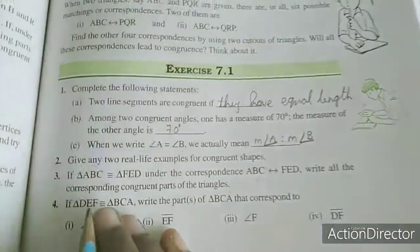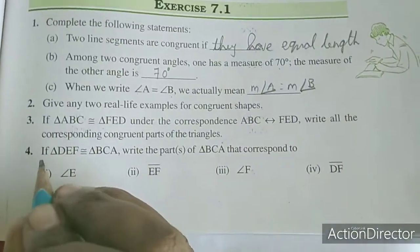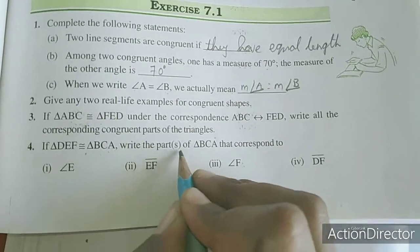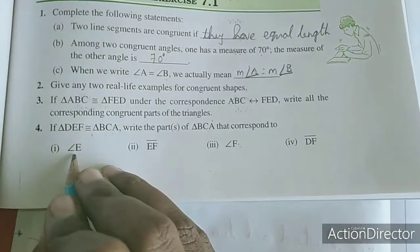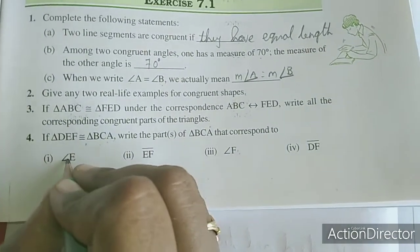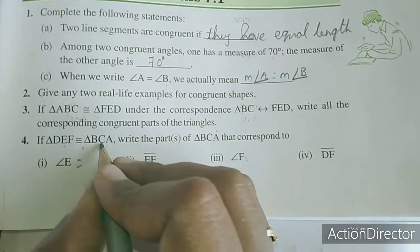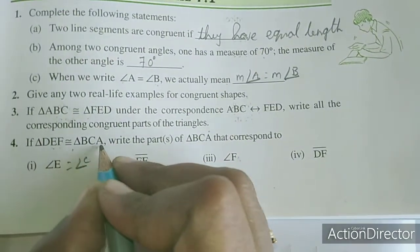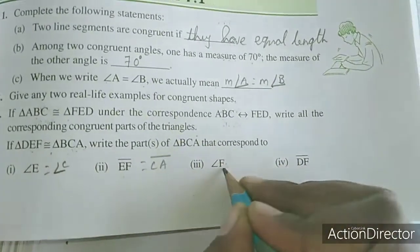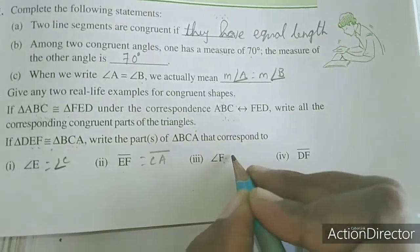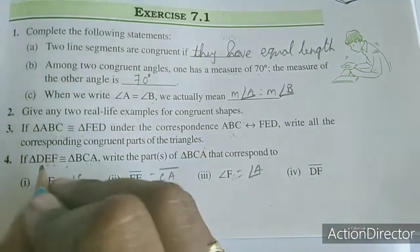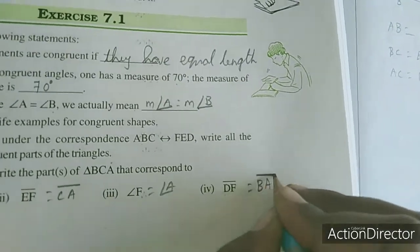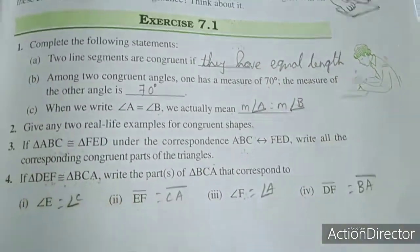Fourth problem: If triangle DEF is congruent to triangle BCA, write the parts of triangle BCA that correspond to the given parts. Angle D equals angle B. Angle E equals angle C. EF corresponds to CA. BA corresponds to DF.